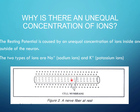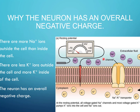There are two types of ions: sodium ions and potassium ions. There are more sodium ions outside the cell than inside the cell, and more potassium ions inside the cell than outside. The neuron has an overall negative charge because there are more positive sodium ions outside than positive ions inside. Consequently, there is an overall negative charge across the cell membrane.